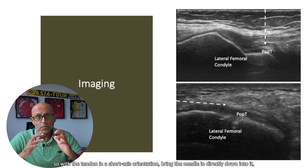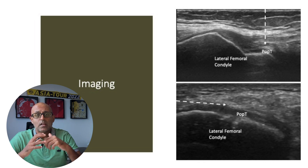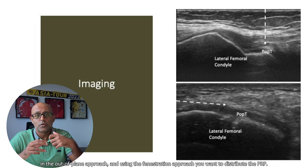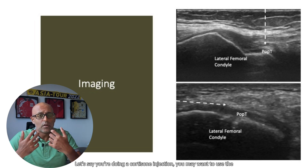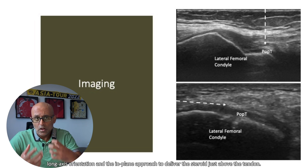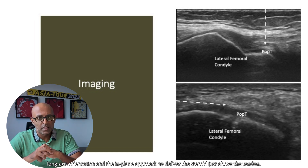With the tendon in a short axis orientation, bring the needle in directly down into it in the out-of-plane approach. Using the fenestration approach, you want to distribute the PRP. Or, if you're doing a cortisone injection, you may want to use the long axis orientation and the in-plane approach to deliver the steroid just above the tendon.